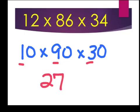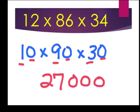Now, I need to go back to my problem and see that there are 1, 2, 3 zeros, that I need to tack on to the end of 27. Then I come in from the right, 3 places, put my comma, and 27,000 is the answer to 10 times 90 times 30, but it's only the estimated answer of 12 times 86 times 34.